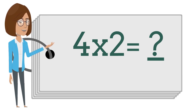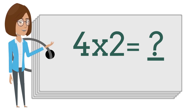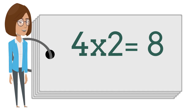4 times 2 is? Can you tell me? Say your answer out loud. 4 times 2 is 8. 4 times 2 is 8.